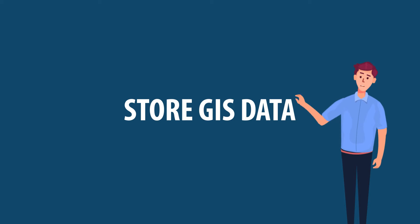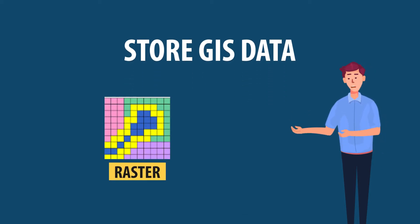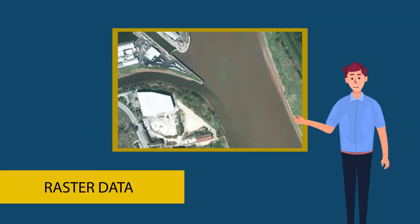There are broadly two models to store GIS data: raster and vector. The raster model stores data in pixel form, that is, as image format.